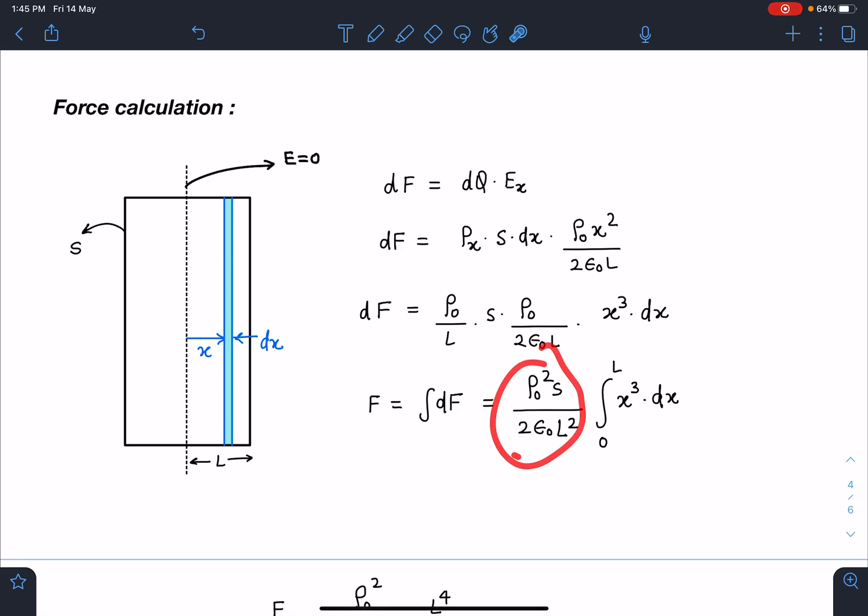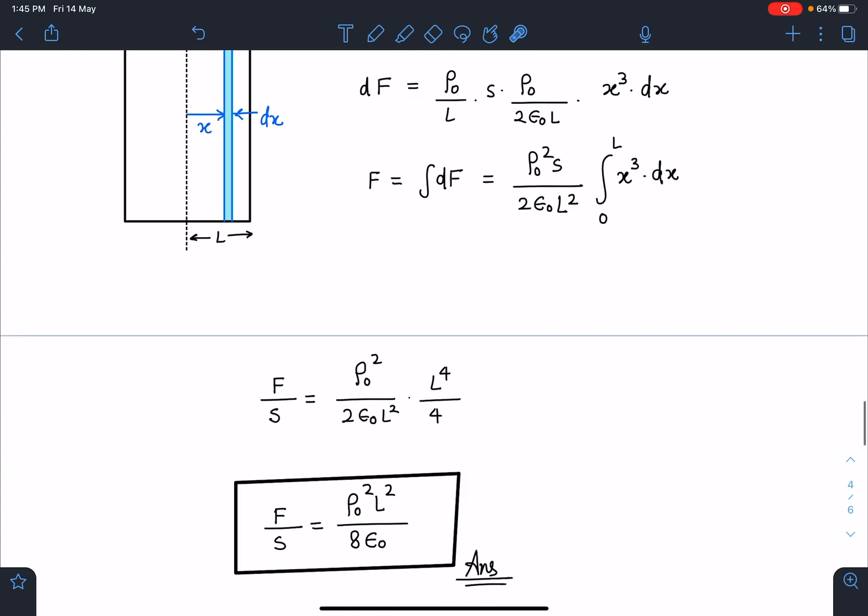This becomes ∫x³ dx with limit from 0 to L, because only on this half I'm interested in finding force. That's how the limit 0 to L comes here, and F/S value will be the force per unit area.